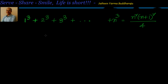Hello, welcome, hearty welcome to you. In this session we will look at how to derive the formula for sum of cubes of first n natural numbers, that's nothing but 1 cube plus 2 cube plus 3 cube up to n terms, which is equal to n squared into n plus 1 whole squared by 4. We will prove this through algebra by leveraging an identity.